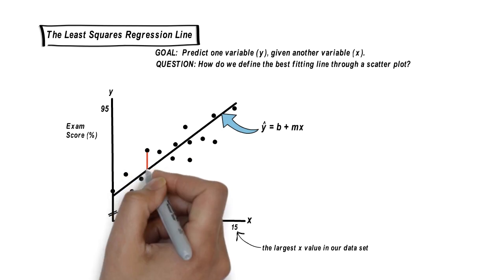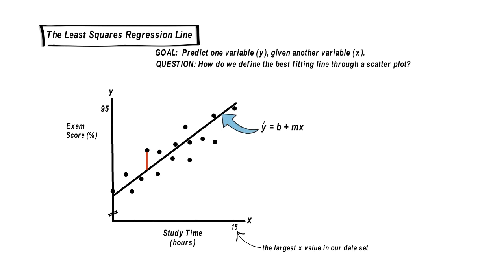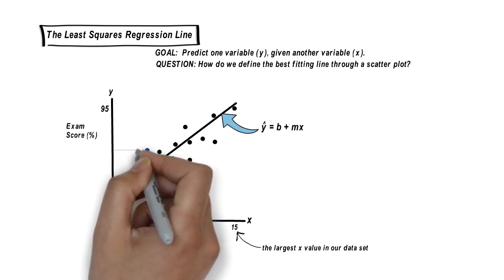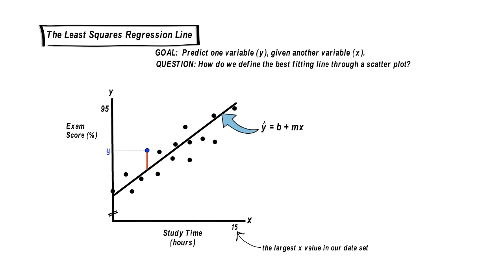This is the all-important distance right here. This is the vertical distance from any data point directly to the line. Let's think about how we can reference this distance notationally. The value at this arbitrarily chosen data point is simply this y value, right?